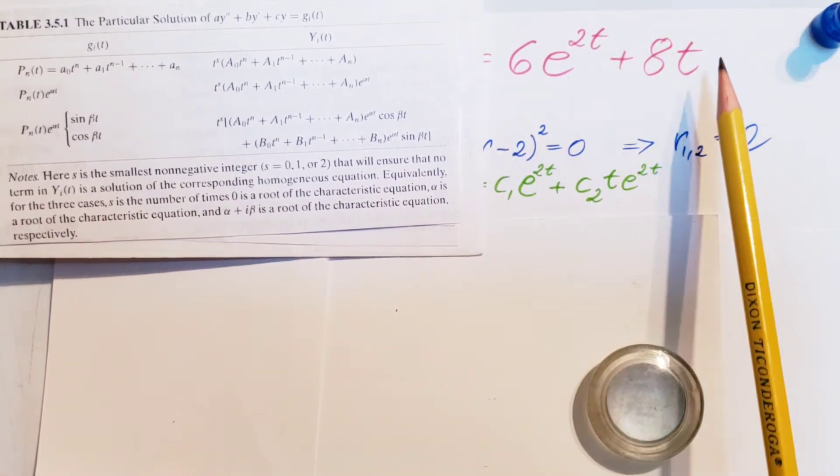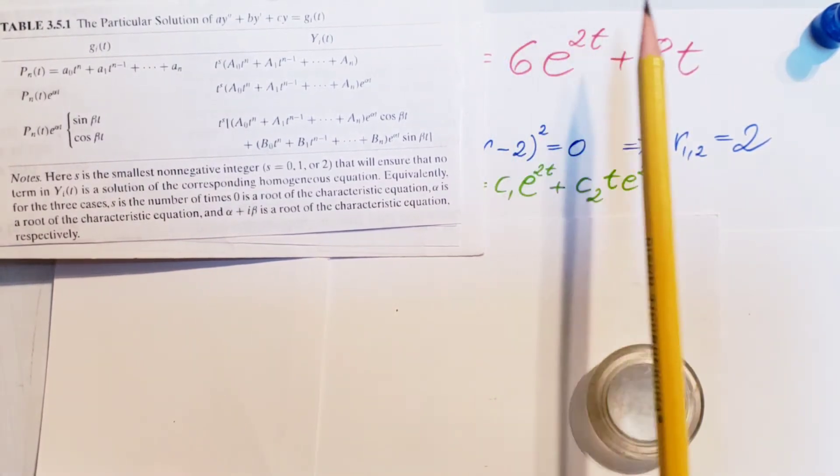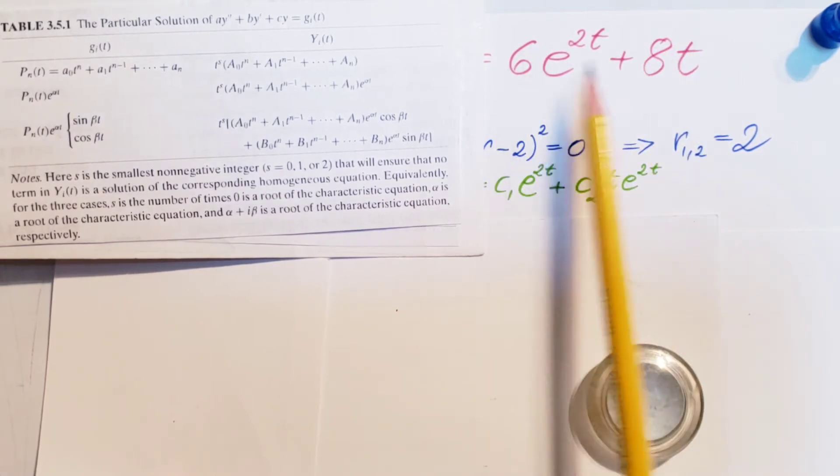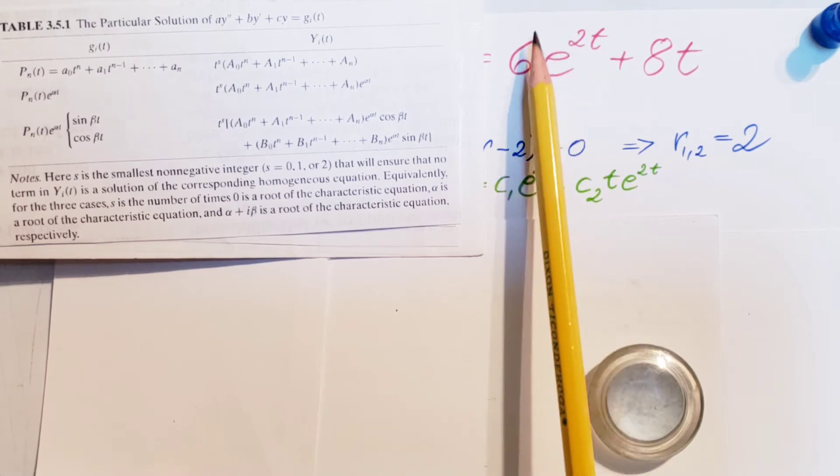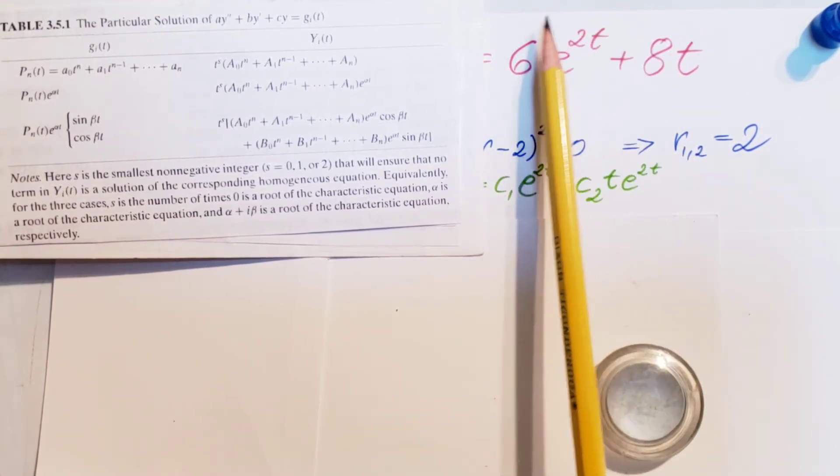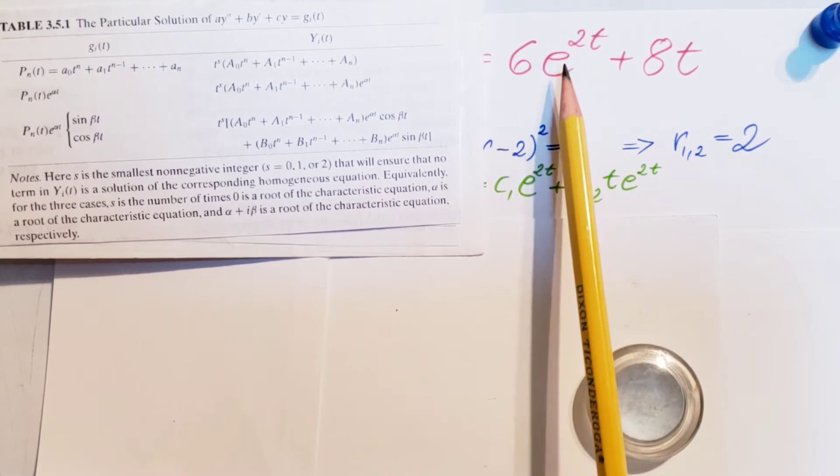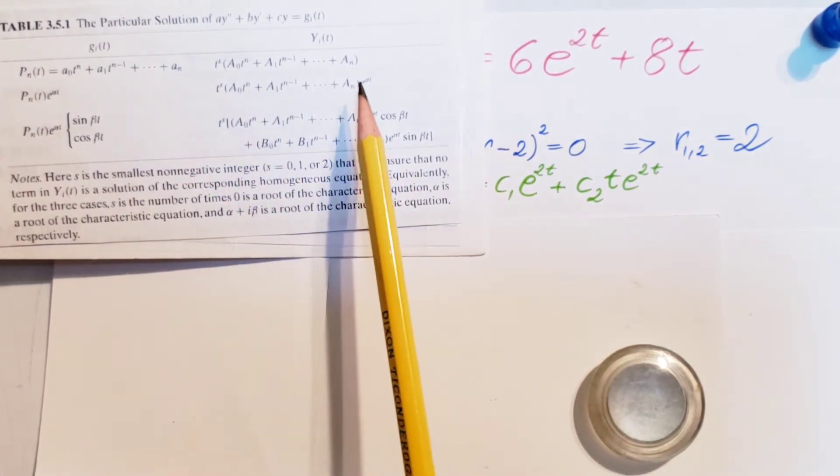For us, we have this and this. We're not going to consider it one. We will have to work separately with this one, and separately with this one. For this part, we have an exponential, therefore we're going to be guessing this right here.